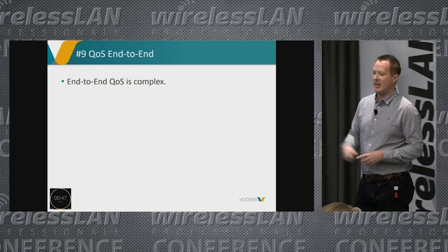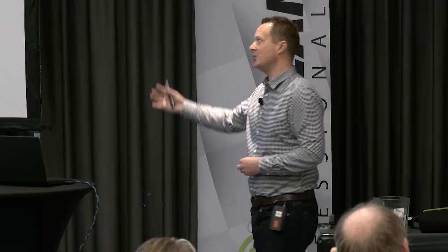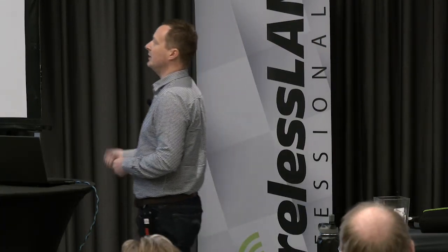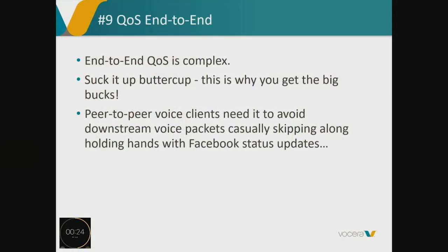QoS end to end: it's complex getting QoS working through the whole LAN because you don't know what path that voice traffic will take across the building, but frankly — that's why we're here, that's why we get paid. Just get it working. I see too often the voice client sending traffic marked as voice, going up fine, but when it's coming downstream it's been downgraded because somewhere in the network you haven't maintained that DSCP tagging.